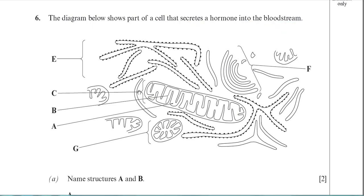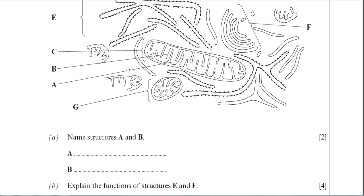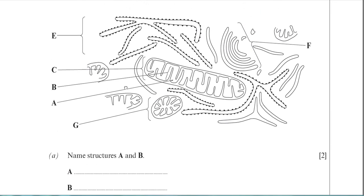Let's just go straight down to part A. Name structures A and B. So A and B are right next to each other. Basically, A and B are relating to structures inside an organelle.